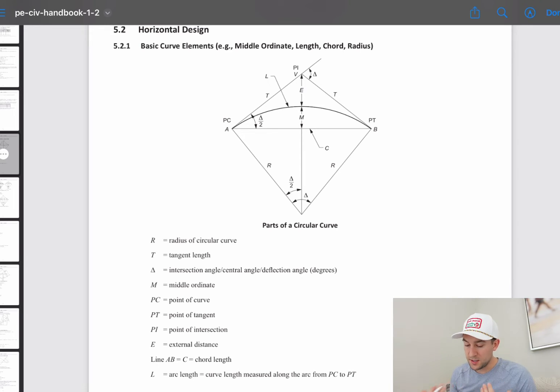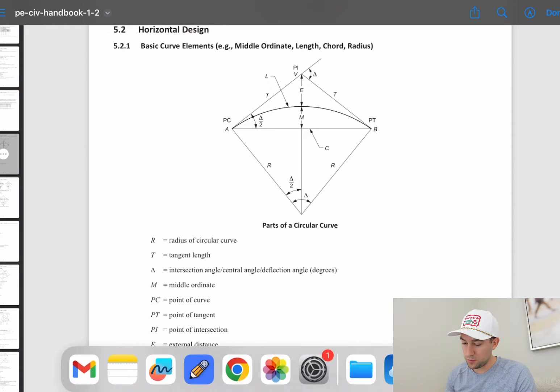And PC and PT, so PC is the point of curvature. And again, you have this right in the reference manual. And then you have the PT, the point of tangency. So let's actually go back to the problem.